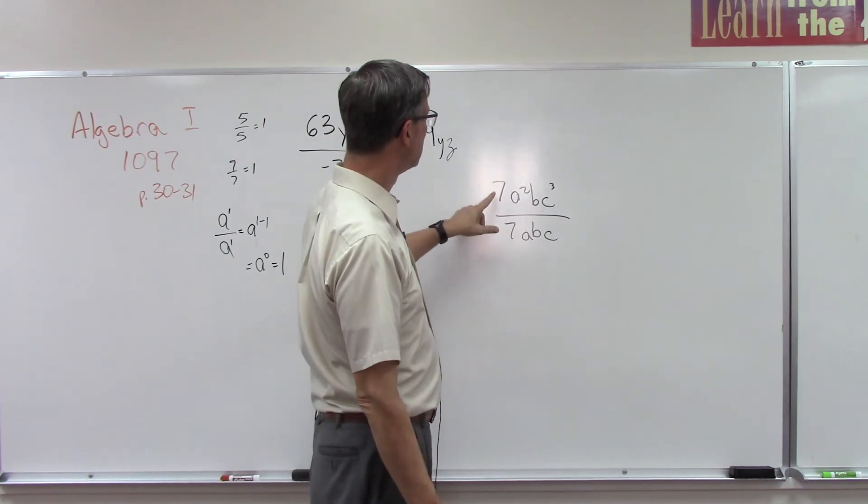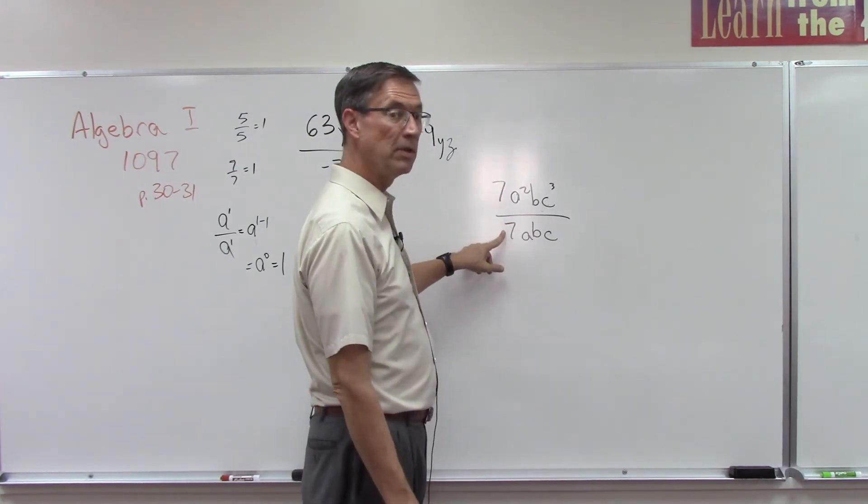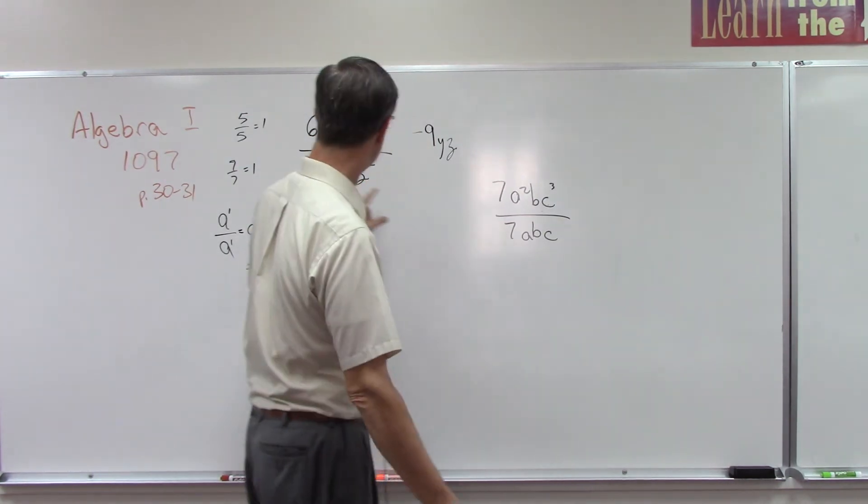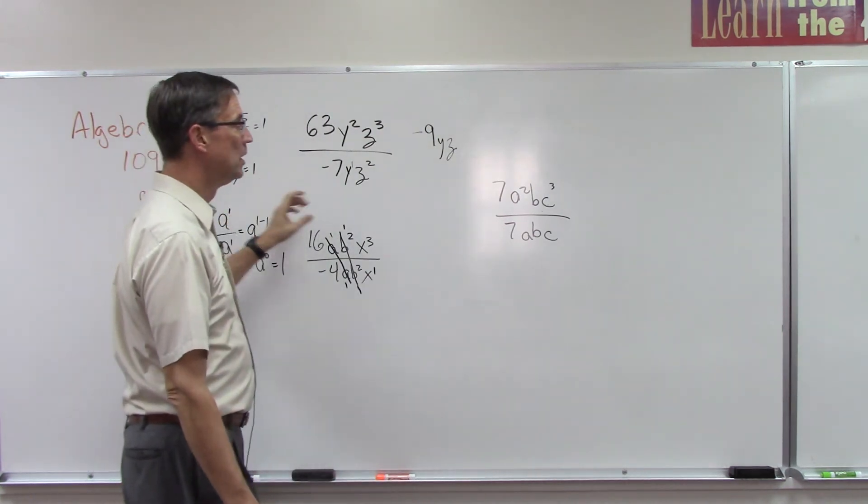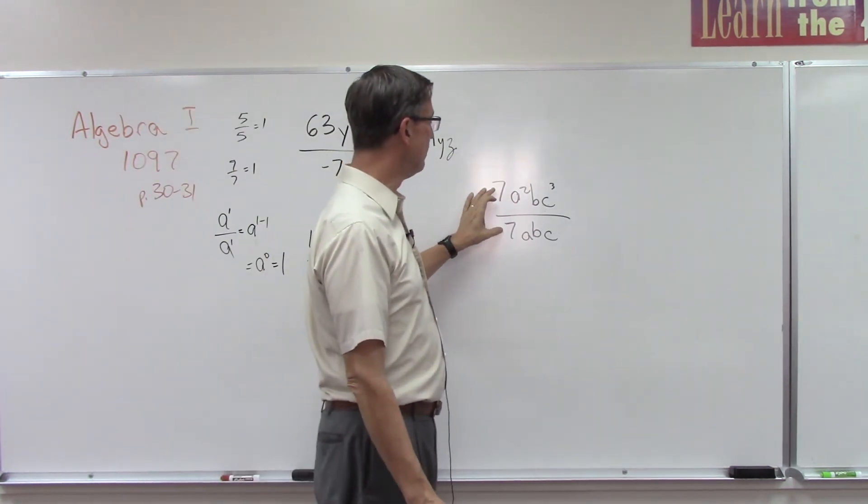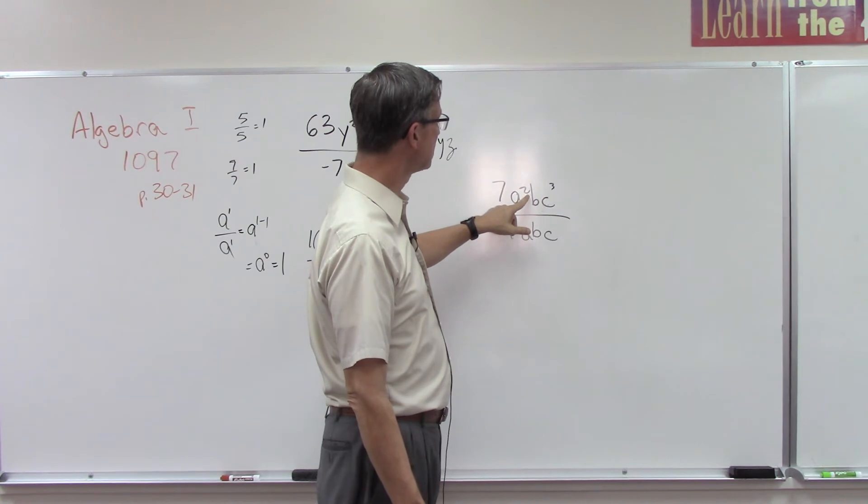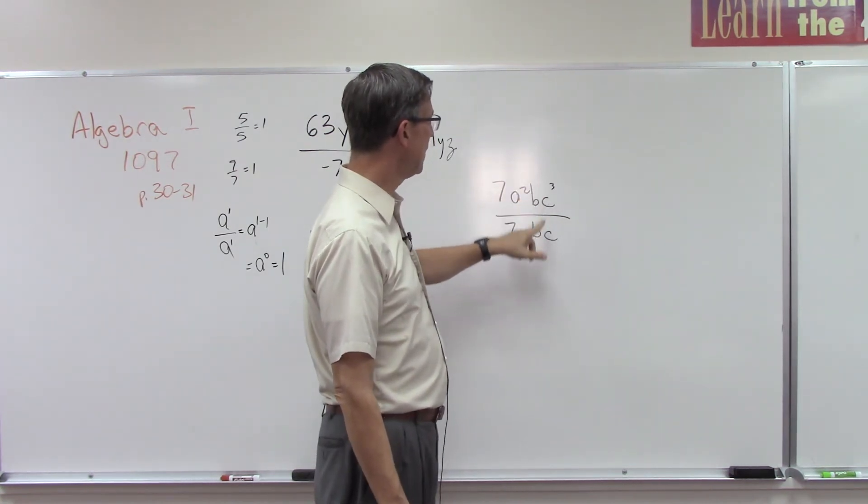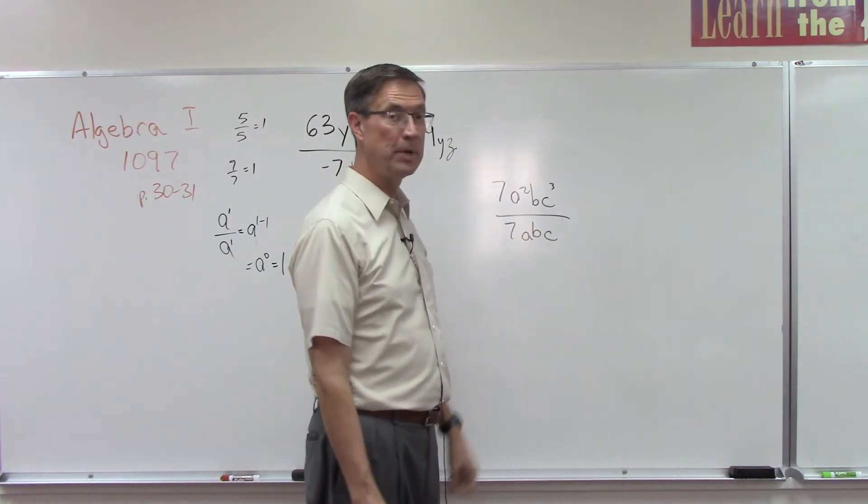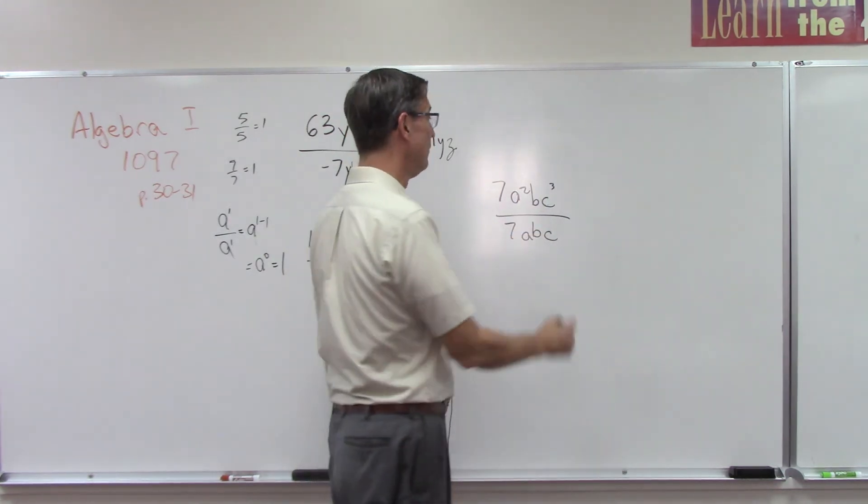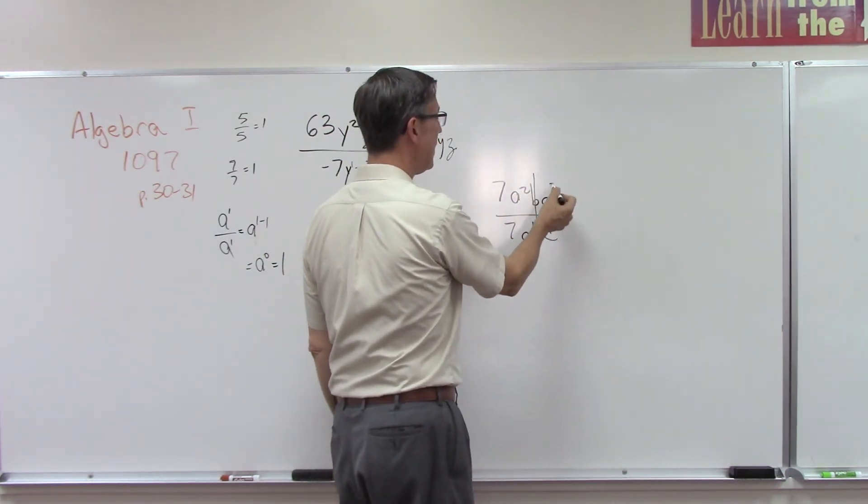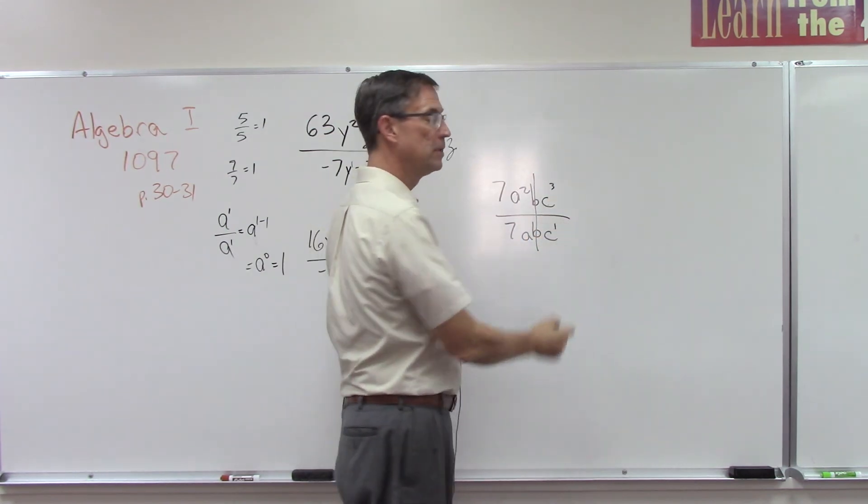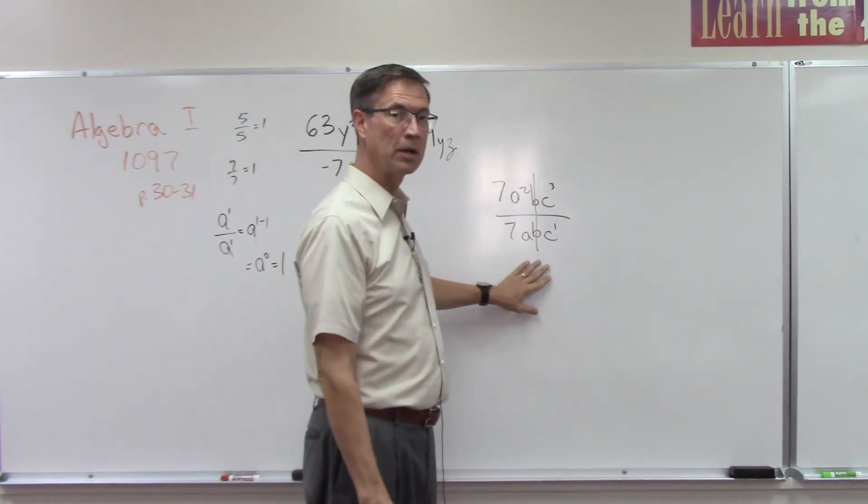Let's look at this one. The same thing kind of happens here. The 7 over the 7 - okay, 7 over 7 becomes 1, so that's going to cancel out. I can subtract this exponent 2 minus 1. Here the b on the top, b on the bottom, 1 minus 1 becomes b⁰, so really that just cancels out. And I can subtract 3 minus 1.